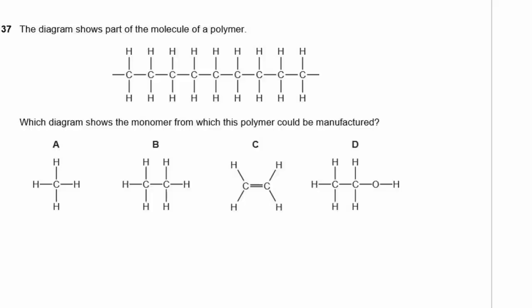Question 37. The diagram shows part of a polymer molecule. Which diagram shows the monomer from which this polymer could have formed? The polymer would have been formed from a monomer with a double bond — the double bond breaks and each side bonds to the next monomer unit. There are always four bonds per carbon, so the double bond with two hydrogens becomes a single bond with the extra bond connecting to adjacent monomers. The answer is C.